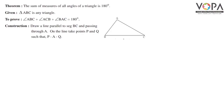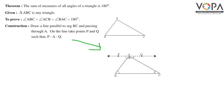Theorem: the sum of measures of all angles of a triangle is 180 degrees. We are given triangle ABC is any triangle, and we have to prove that angle ABC plus angle ACB plus angle BAC is equal to 180 degrees. For the construction, we will draw a line parallel to segment BC passing through A, and on that line we will take points P and Q such that P-A-Q.